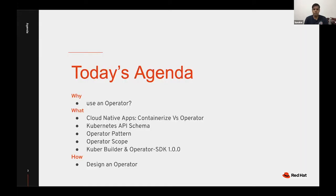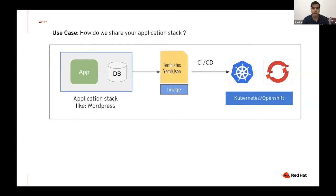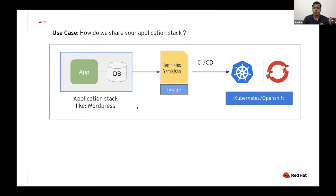We'll go through why you need an operator, and understand the what and how as well. Let's say you have an application stack like WordPress — you have an application and a database. The way you run these on Kubernetes is using some kind of template: YAML or JSON templates where you define deployment configuration, parameters, the route you want to expose, the services you want. And that's how you deploy using CI/CD or from your local machine.